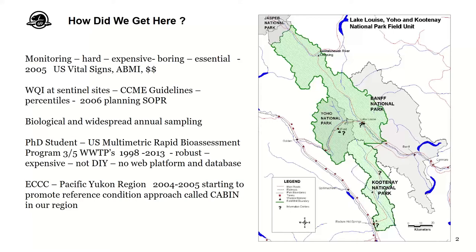Also at this time, the Pacific-Yukon region — where Yoho, Kootenay, Revelstoke, and Glacier are located — is one of the CABIN focal areas in the country. There's a large concentration of technical staff there, the CABIN lead is there, and they had already worked on the Fraser model and decided to start applying it more broadly in British Columbia. They already worked with us closely on water quality monitoring inside Yoho, Kootenay, Revelstoke, and Glacier, and they came to us and said they were going to start applying CABIN there — did we want to work with them?